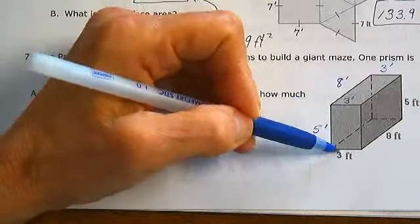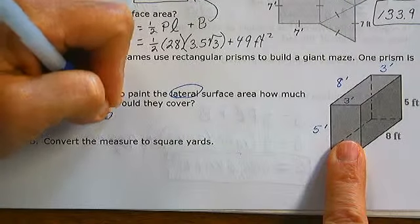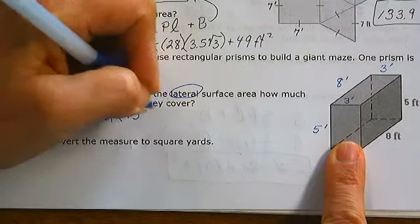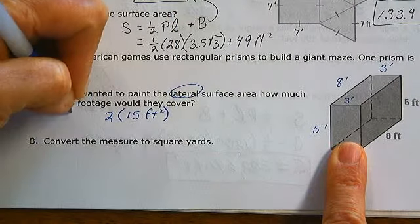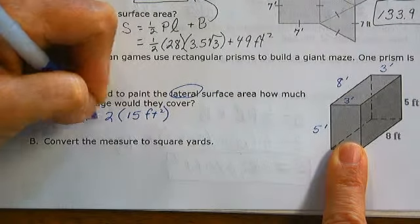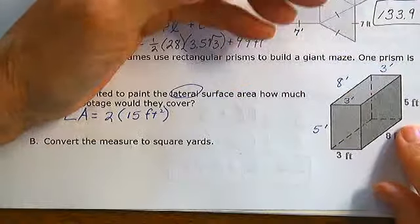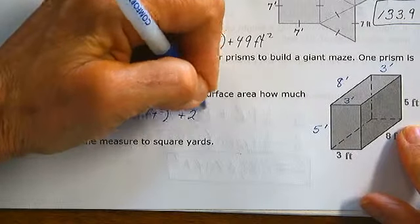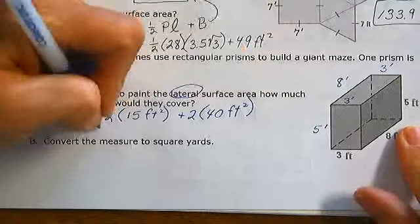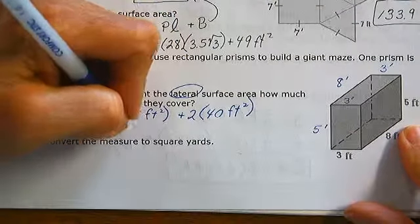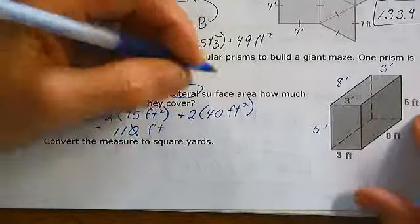They would have to paint this side, which is 3 by 5 or 15 square feet, but they have 2 of them. So we have 2 times 15 square feet. We also have this 8 times 5, which is 40 square feet, but we have 2 of those. So that gives us 30 plus 80 or 110 square feet just for the lateral surface area.